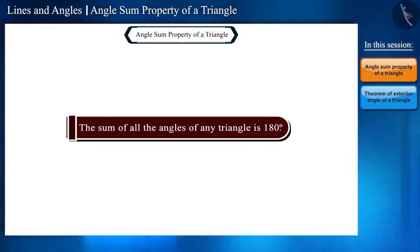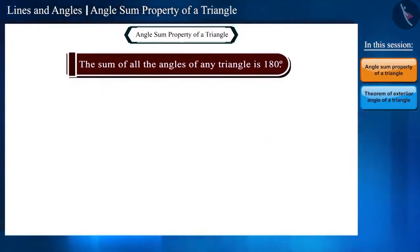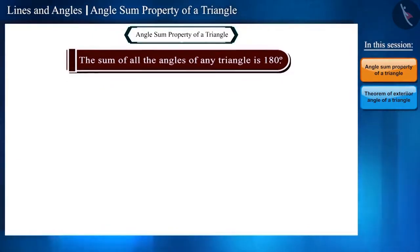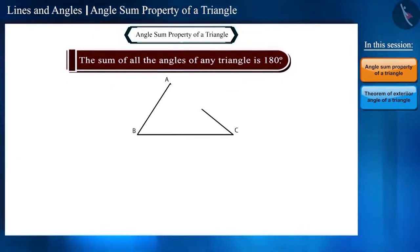Friends, you have learned this statement before, but today we will prove it. Suppose a triangle ABC is given, whose angles are angle A, angle B, and angle C.